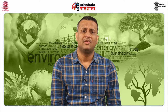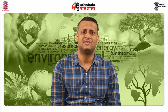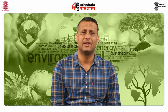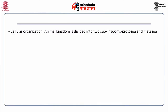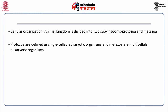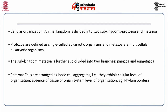Animal classification is based on various parameters such as cellular organization, symmetry, number of germ layers, body cavity, presence or absence of notochord and embryonic development. The animal kingdom is divided into two sub-kingdoms: protozoa and metazoa. Protozoa are single-celled eukaryotic organisms and metazoa are multicellular eukaryotic organisms. The sub-kingdom metazoa is further subdivided into two branches: parazoa and eumetazoa. In parazoa, cells are arranged as loose cell aggregates exhibiting cellular level of organization, with absence of tissues or organ system level of organization.